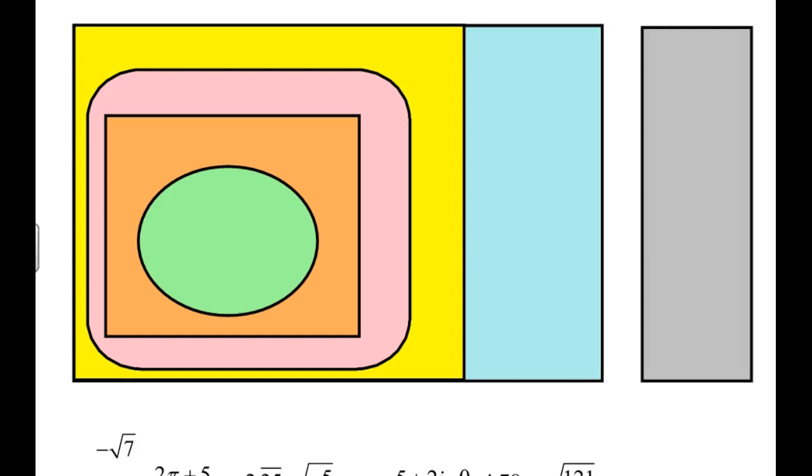So let's organize this into a Venn diagram. I think it will help us. So all of these numbers here in this rectangle are real numbers. In this rectangle, we have our imaginary numbers. And there are two types of real numbers. There are rational numbers.